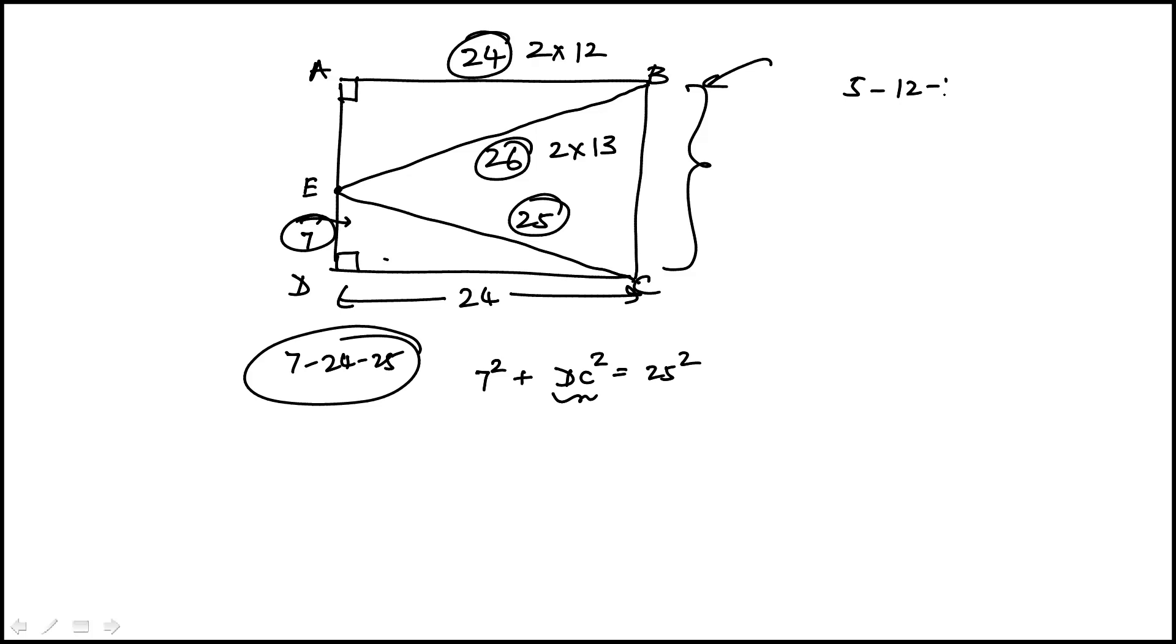So this is our 5, 12, 13 multiple of that. That means this side AE would be 2 times 5, and that's 10.